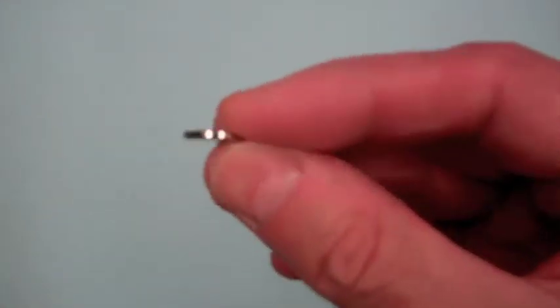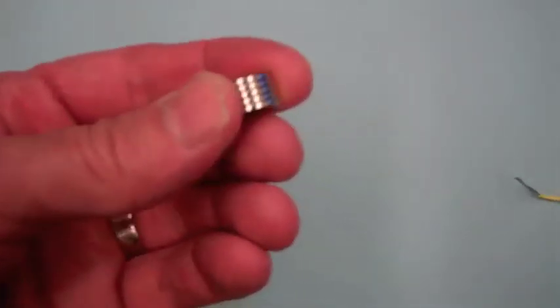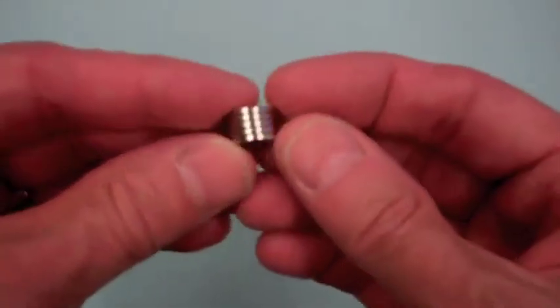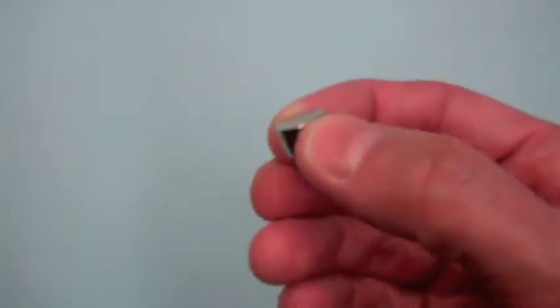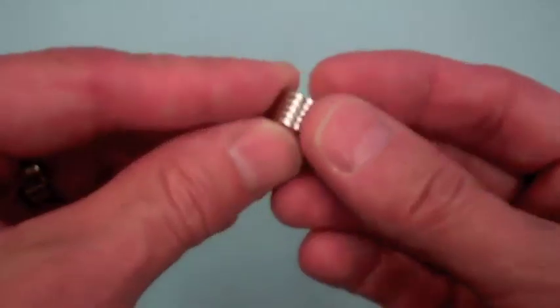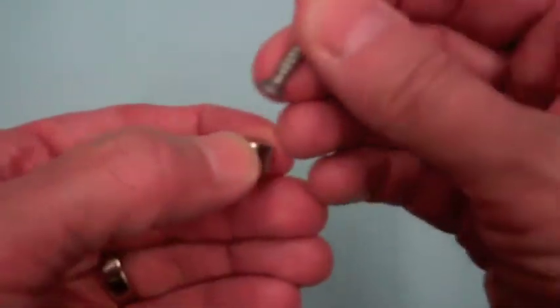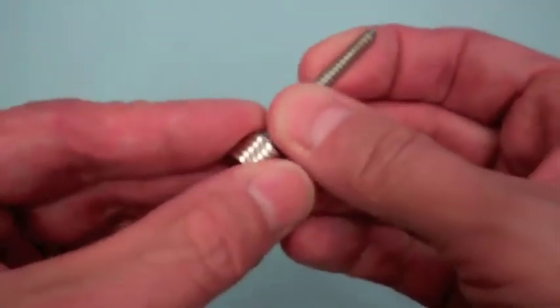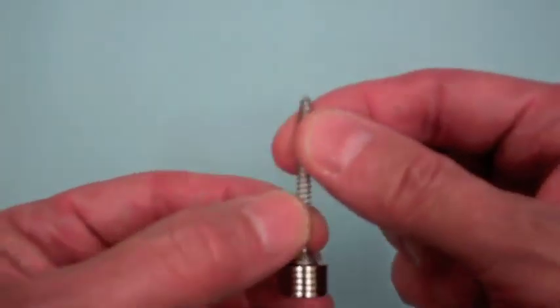I happen to have several of these thin disc magnets, so I put several of them in a stack, so this you can think of as just one larger magnet of this shape and size, and I'm going to attach this magnet to the head of this screw.